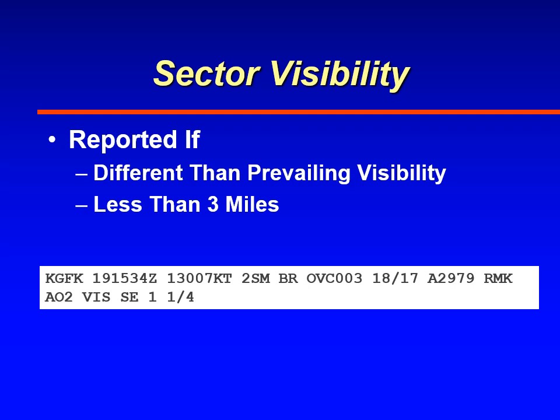There are technical reporting requirements for different categories of visibility, but don't worry about that. All you need to know is how to read it in the remarks section. Here in this METAR, you see the visibility is two miles, but to the southeast the reported visibility is one and one-quarter mile.